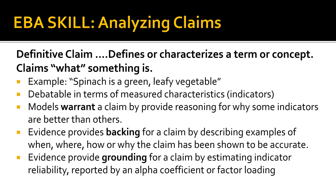What allows us to determine the effectiveness of a definitive claim is whether the measurements of the characteristics, dimensions, or attributes are reliable predictors of whether the factor is present. Collectively, characteristics, dimensions, and attributes are referred to as indicators. For example, a definitive claim could define spinach by specifying its color, shape, or food category.